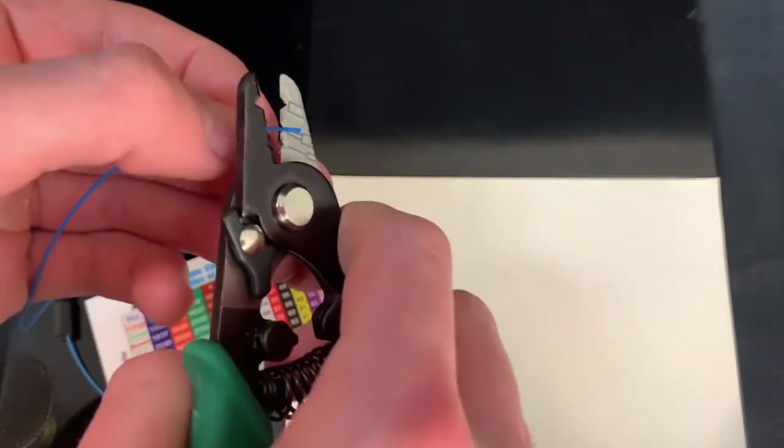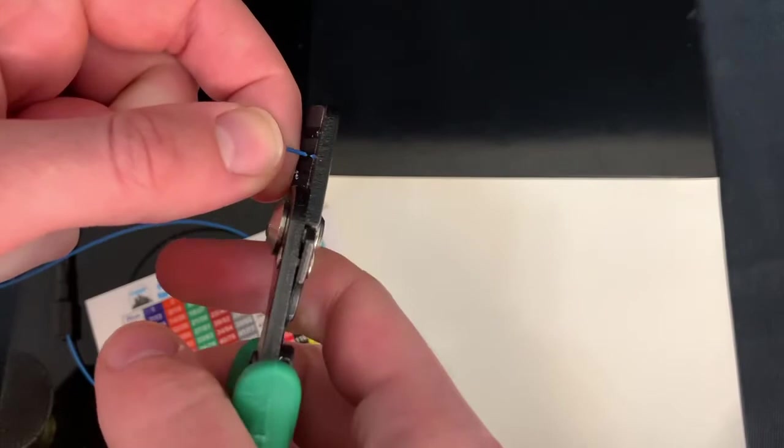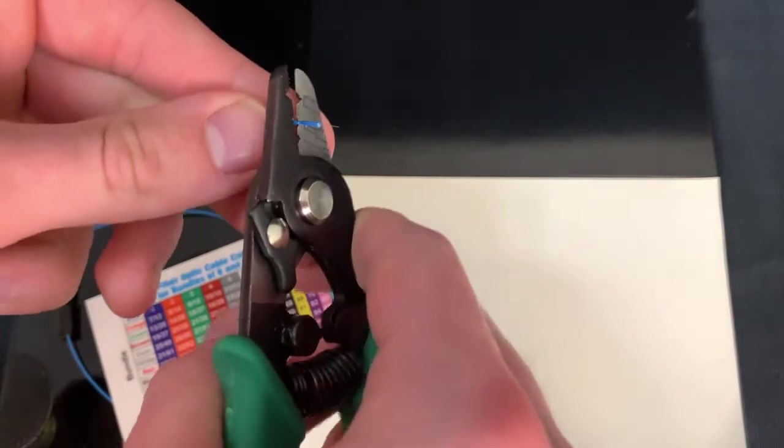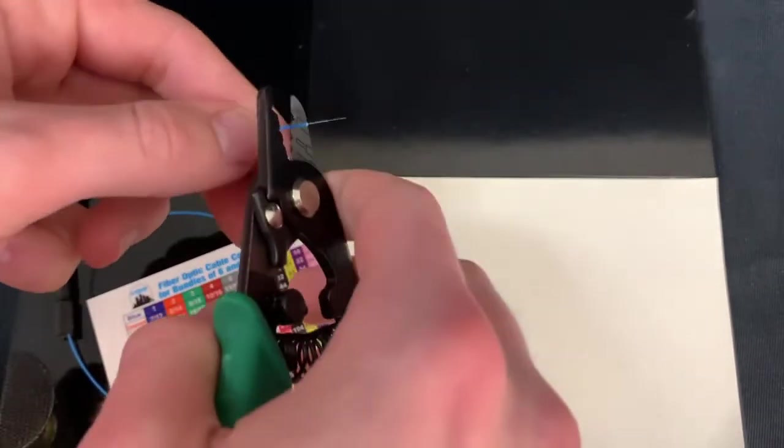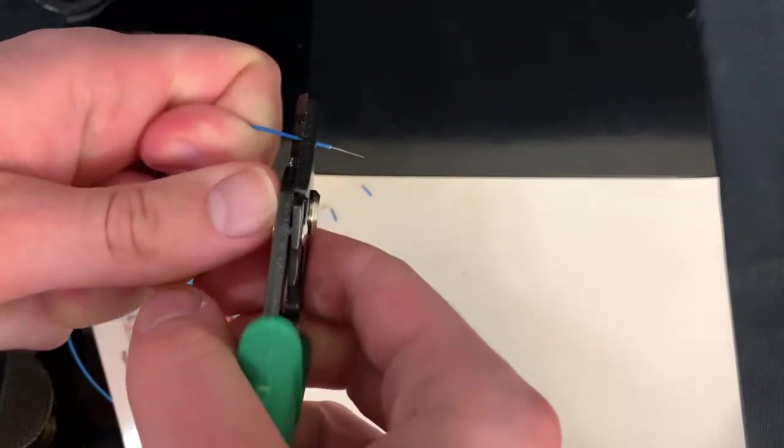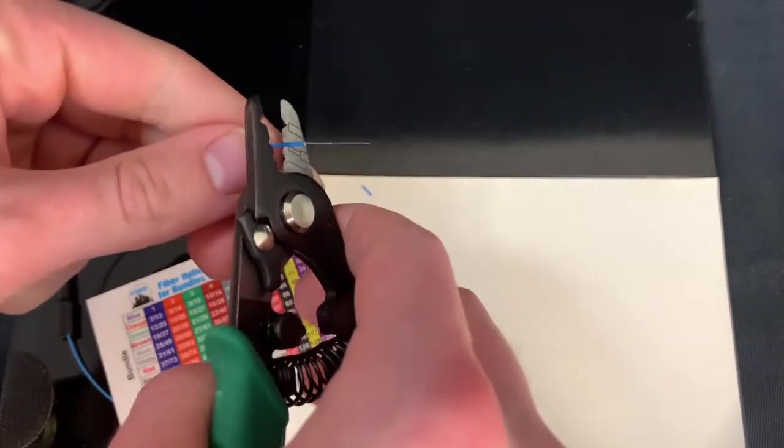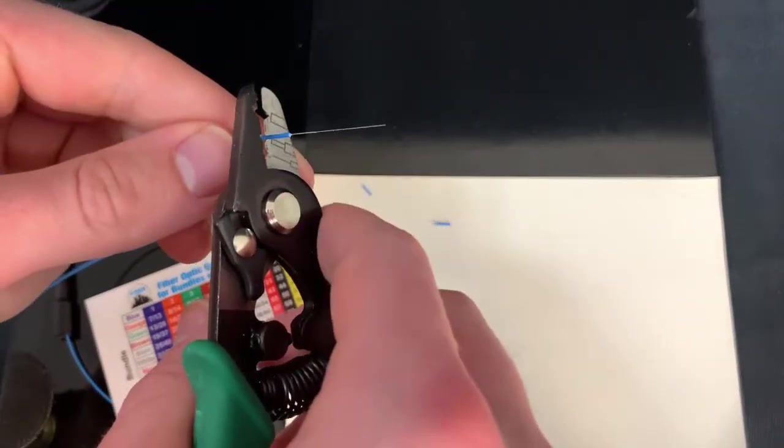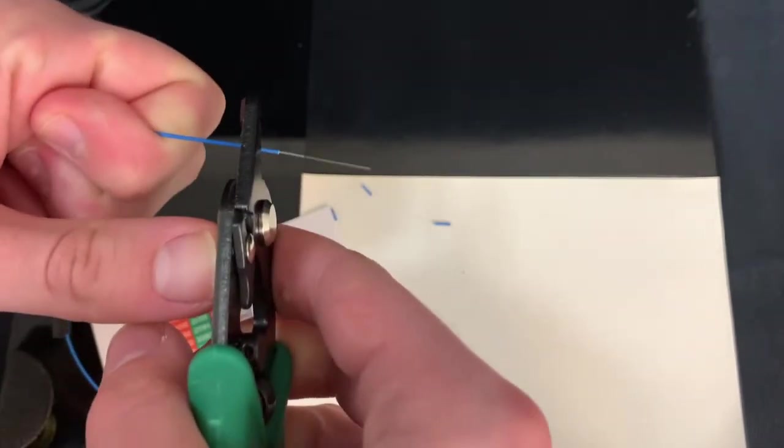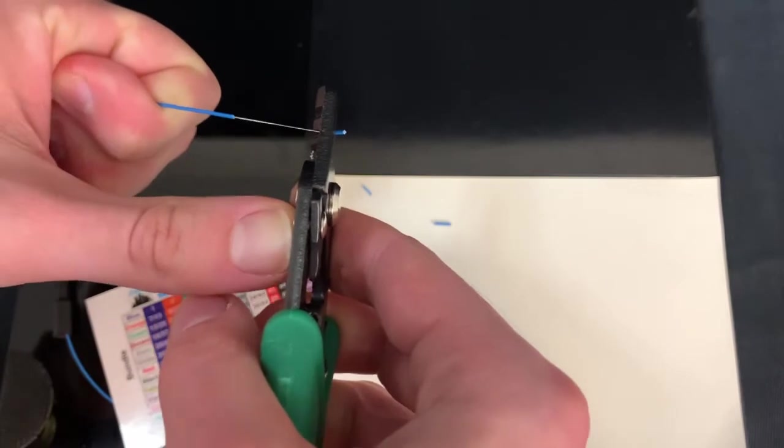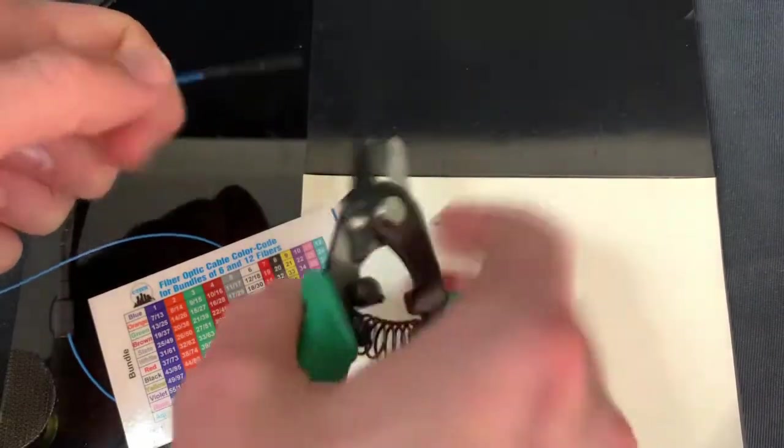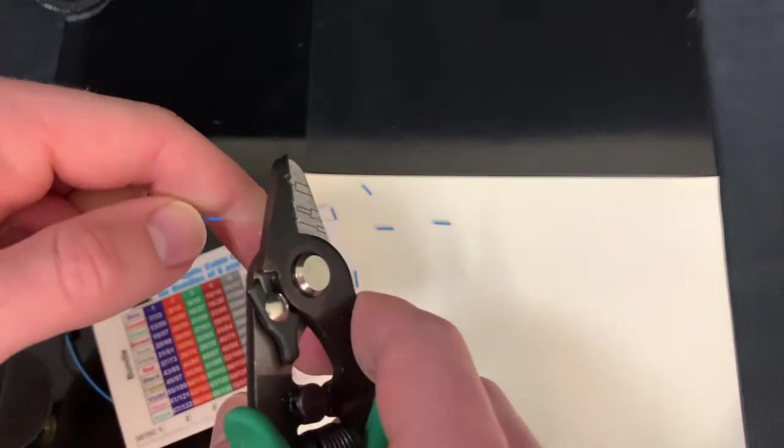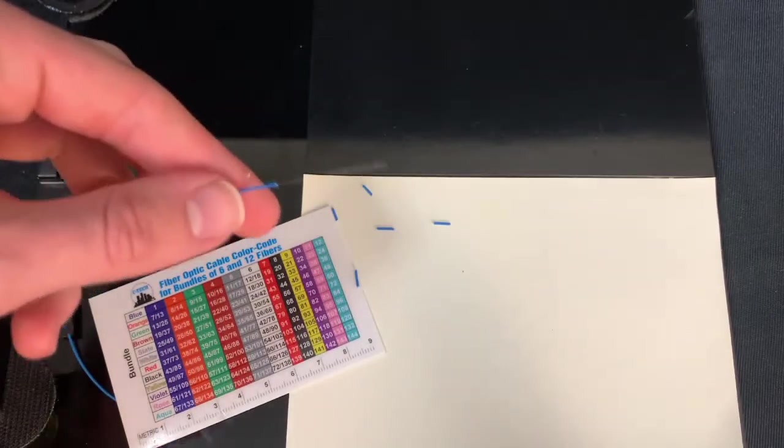A best practice to keep in mind is to go about 5mm at a time while stripping the cable jacket from your fiber to ensure that you won't break your fiber. Now once you've stripped off 30mm of cable jacket from your fiber, you're going to strip off the buffer and then clean it using one of your alcohol pads.